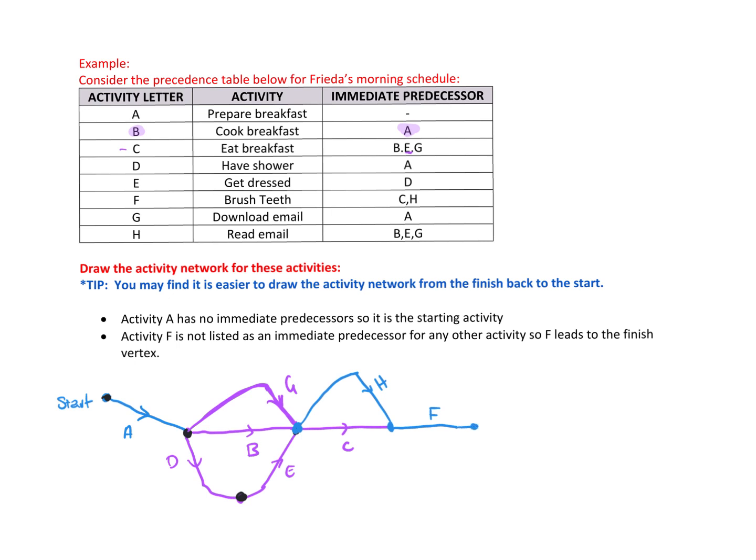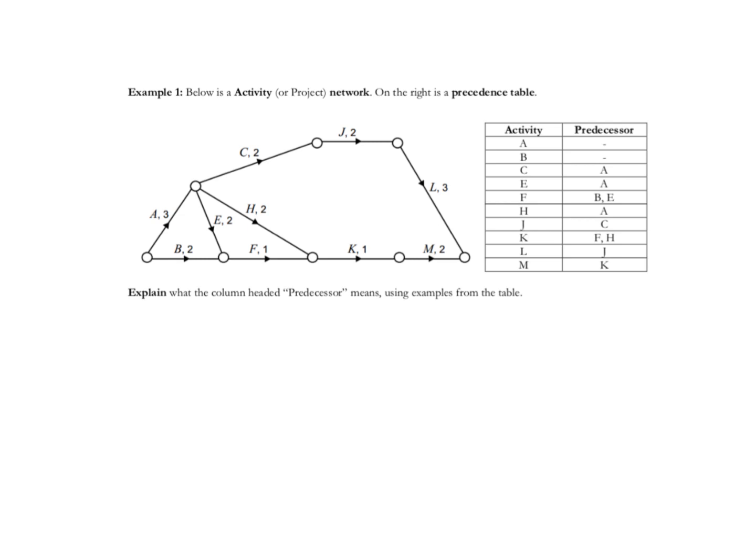So there's the completed diagram — they may draw straight lines and it doesn't matter, it's all the same. Below is an activity network and on the right is the precedence table. The question asks: explain what the column headed 'predecessor' means, using examples from the table.